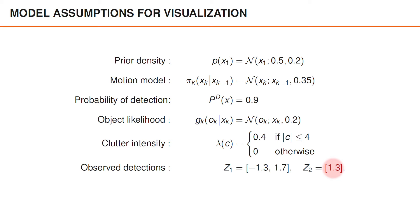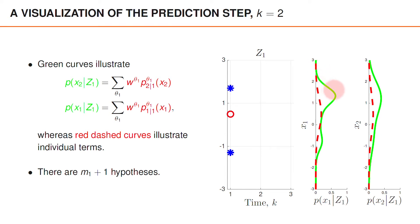In this video, we focus on time step 2 and therefore ignore measurements at time 3. In these figures, the green curve to the left is the posterior at time 1 and the green curve to the right is the predicted density. We have three association hypotheses at time 1. To perform prediction, we predict the densities for the different hypotheses one at a time and then sum up the results.